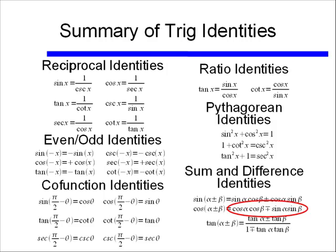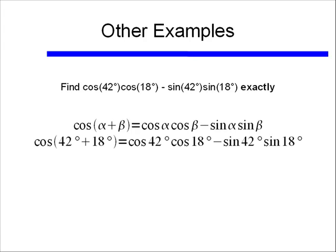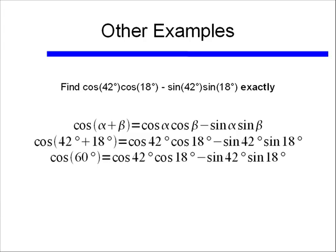If we go back to our summary of trig identities, you see that what we have looks an awful lot like the right hand side of our cosine of alpha plus or minus beta. So if we use that, and if you notice that this expression is in the form of cosine alpha cosine beta minus sine alpha sine beta, then we can say that this whole expression is simply equal to cosine of 42 degrees plus 18 degrees. That might not seem helpful, until we go ahead and add together 42 and 18, and that leaves us with 60 degrees.